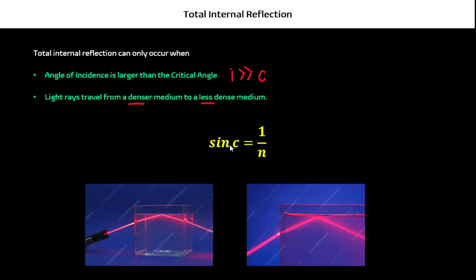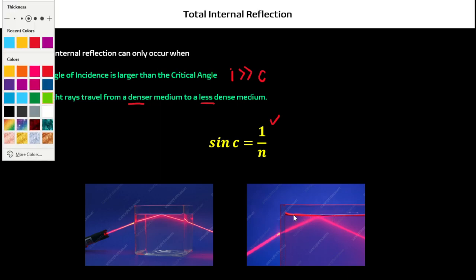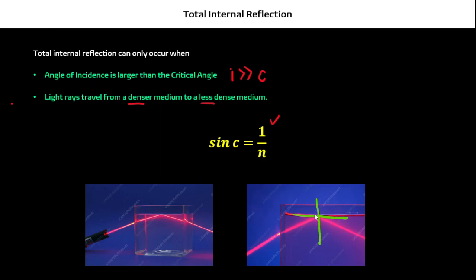The relationship between critical angle and refractive index is: sin c equals 1 over n. We will do some calculation practice in the practice video. By looking at this example, you can safely assume this is your angle of incidence and this is your angle of reflection. Since it is undergoing total internal reflection, you do not see any ray being refracted here — it's being totally internally reflected. So your angle i is going to be equal to R, and your angle of incidence is way greater than your critical angle.